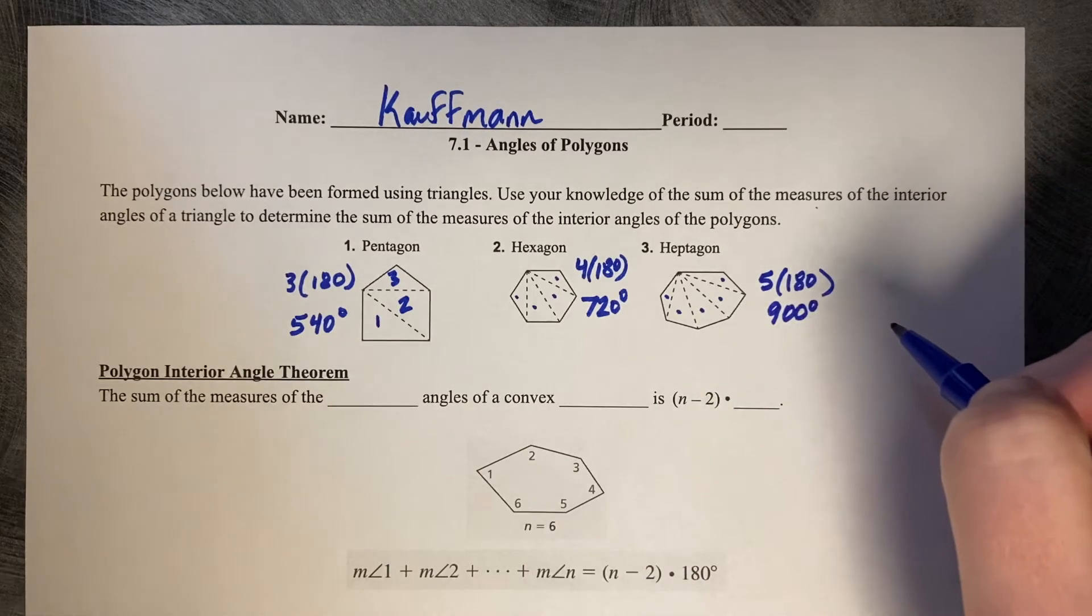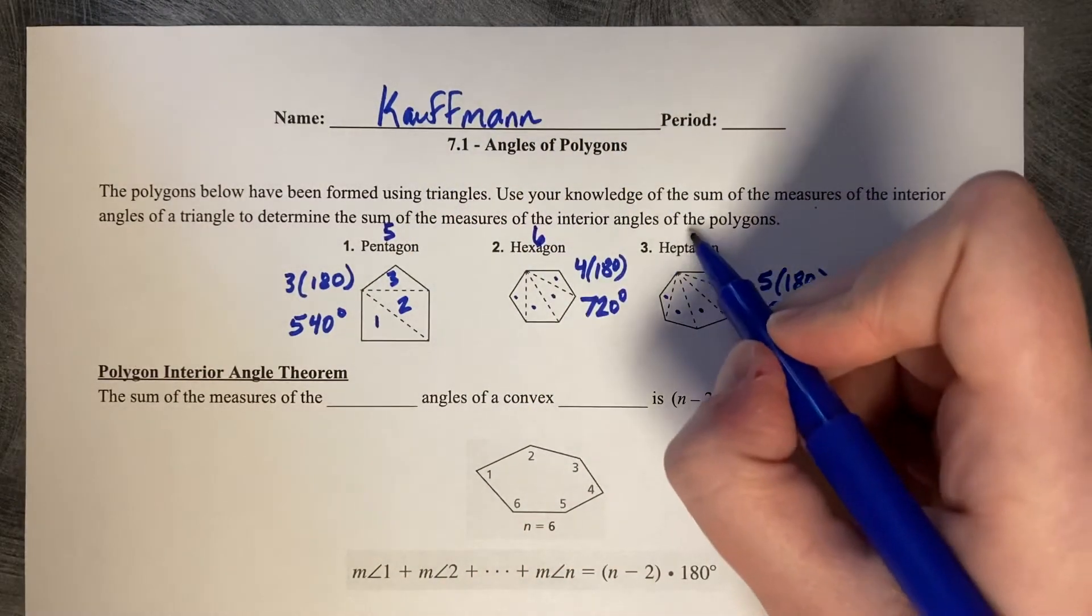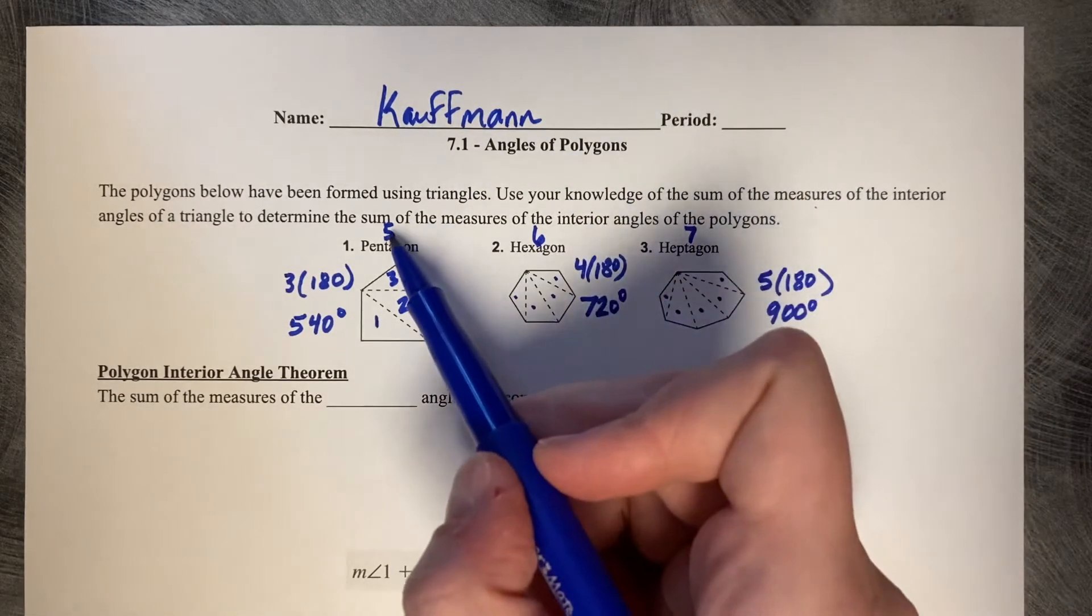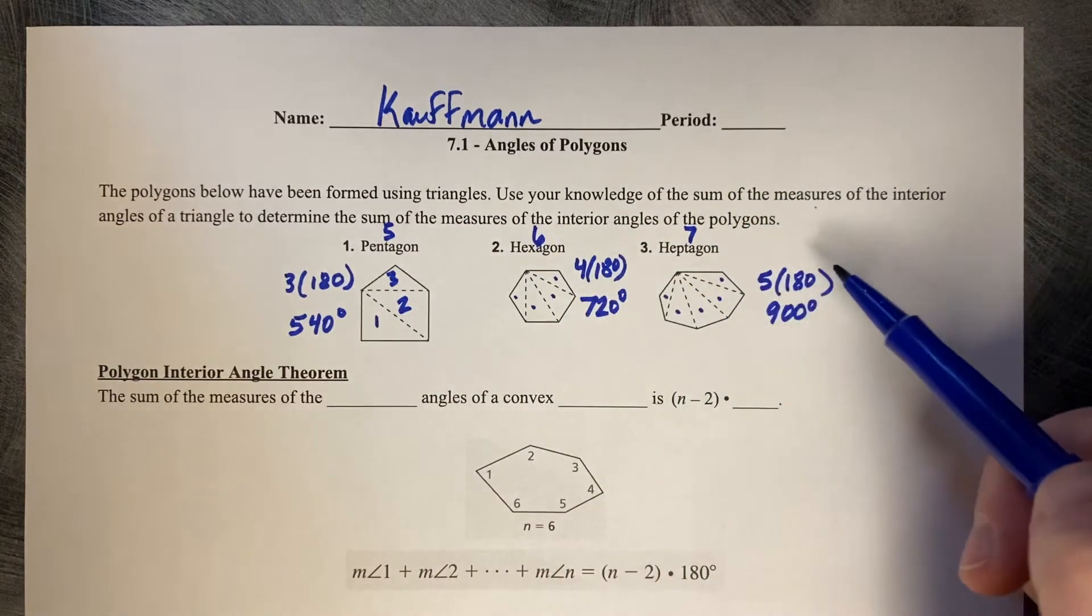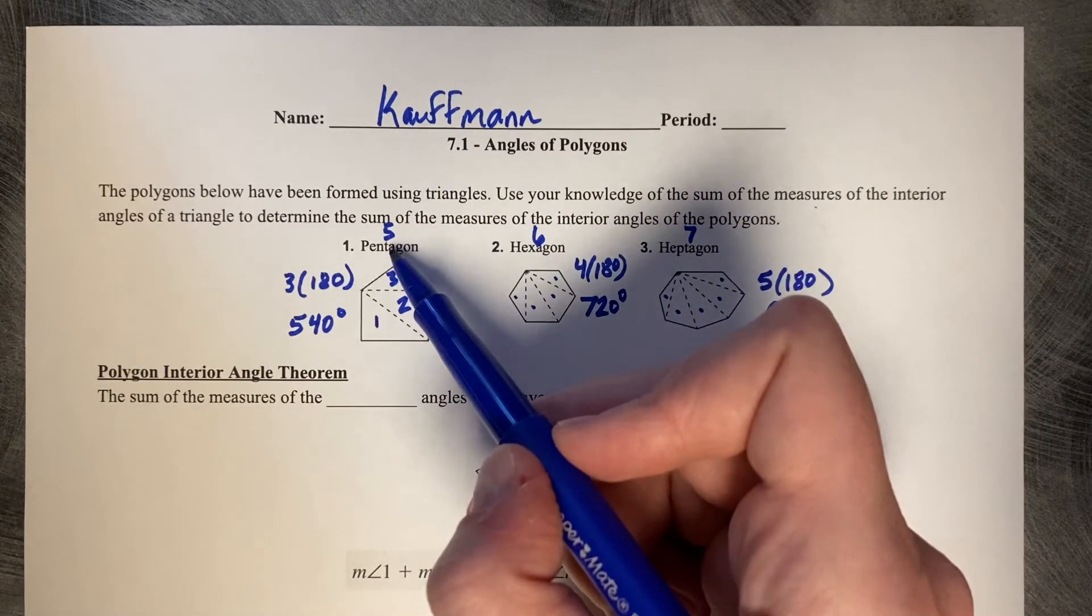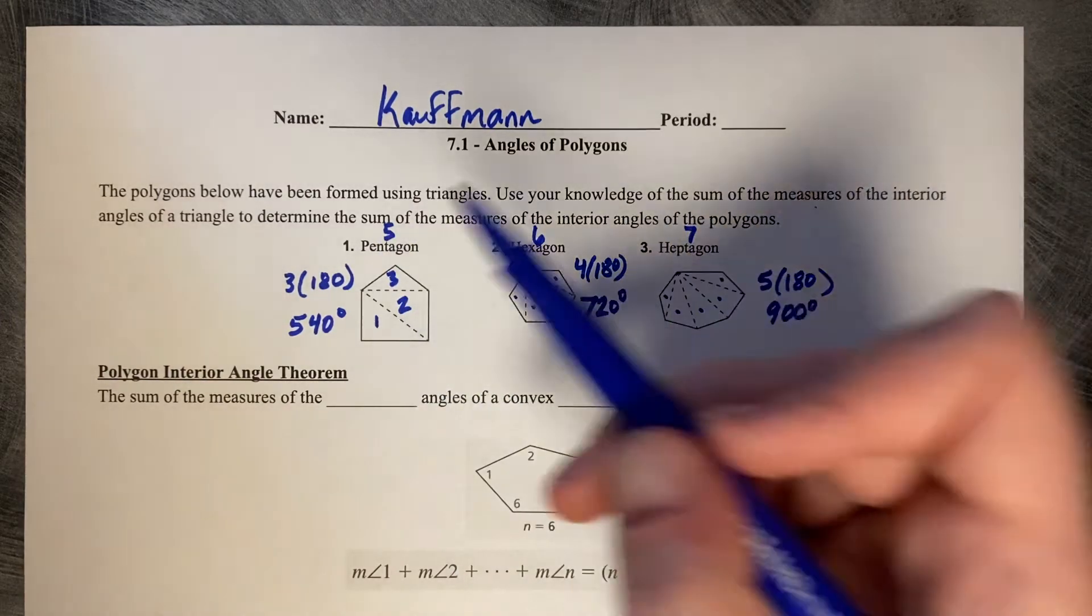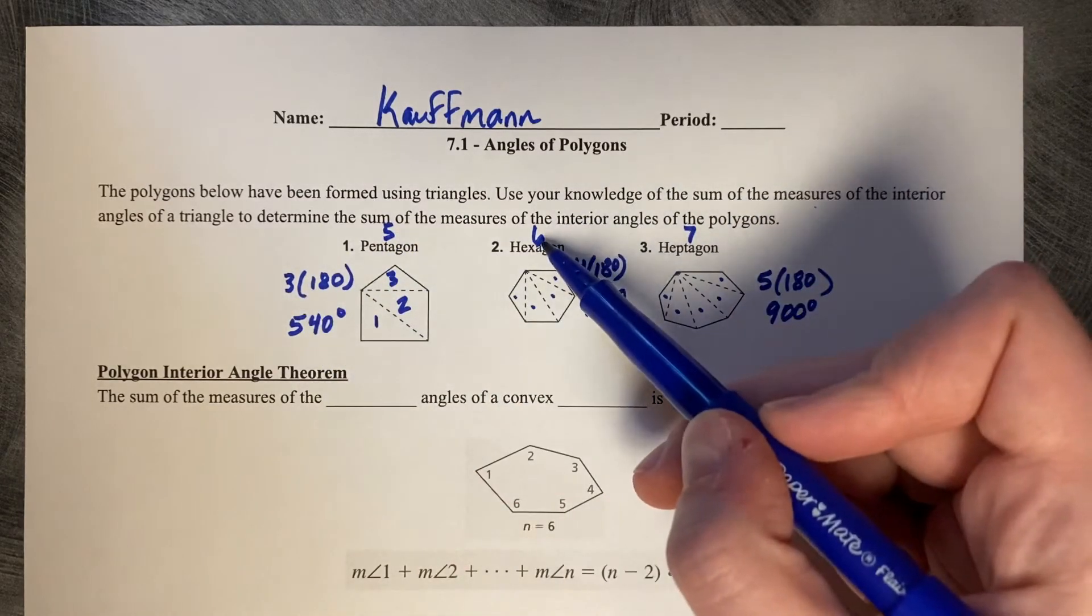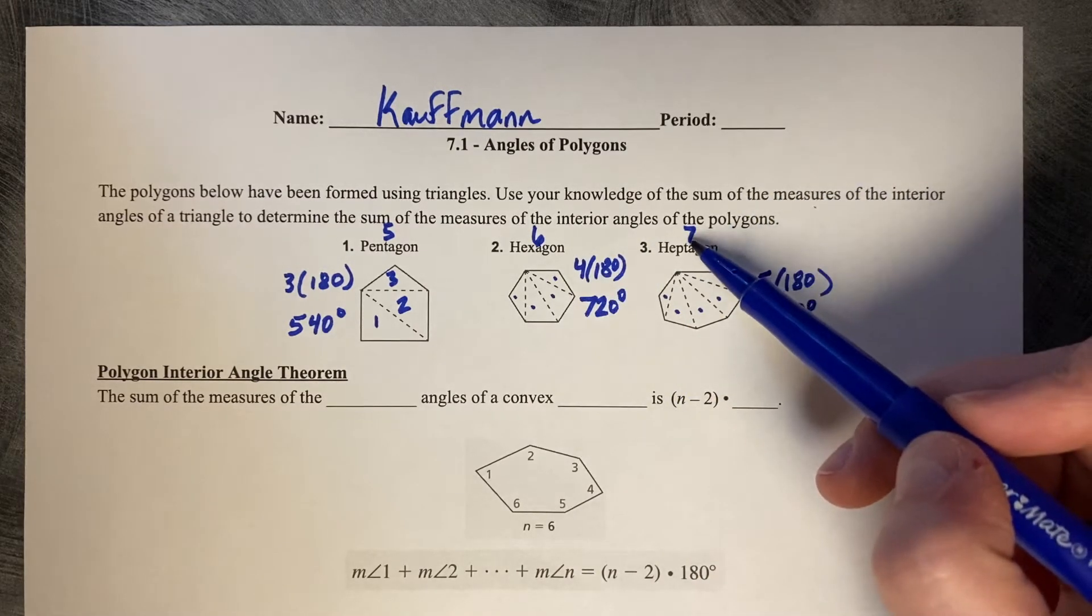Now let's look and see if we can see a connection. So a pentagon is a five-sided figure, a hexagon is a six-sided figure, and a heptagon is a seven-sided figure. Do we notice a pattern? What you might start to notice is that if it's a five-sided figure, how many triangles does it create? It creates two less than the amount of sides. Five minus two is three. A six-sided figure minus two is four. Seven-sided figure minus two is five.